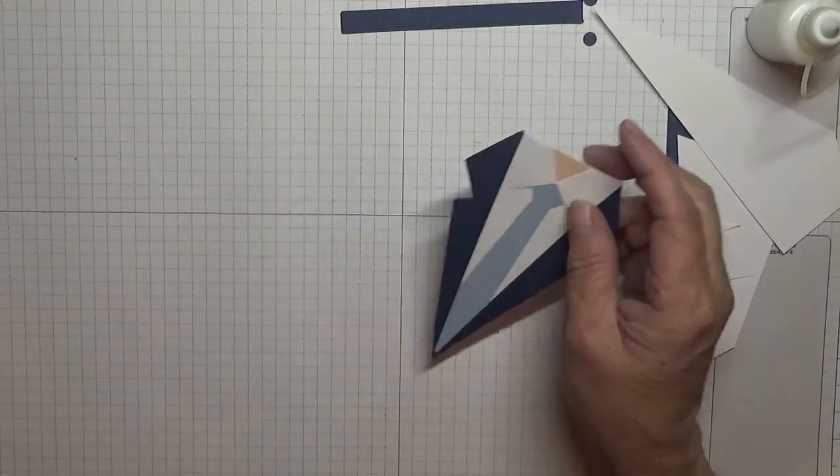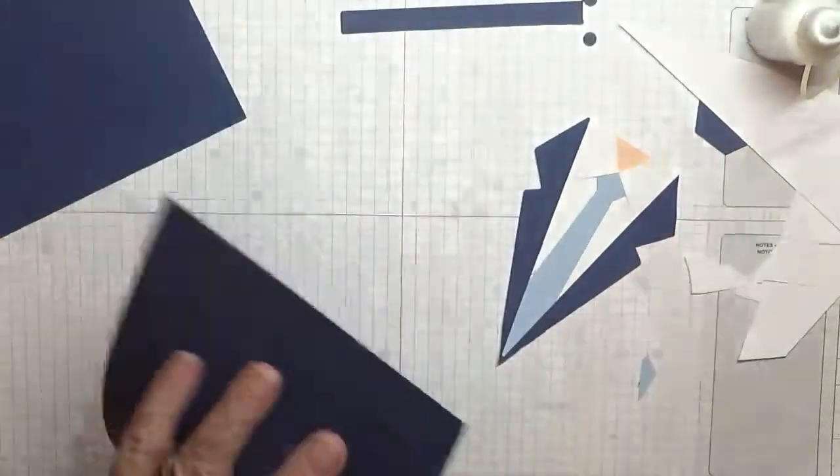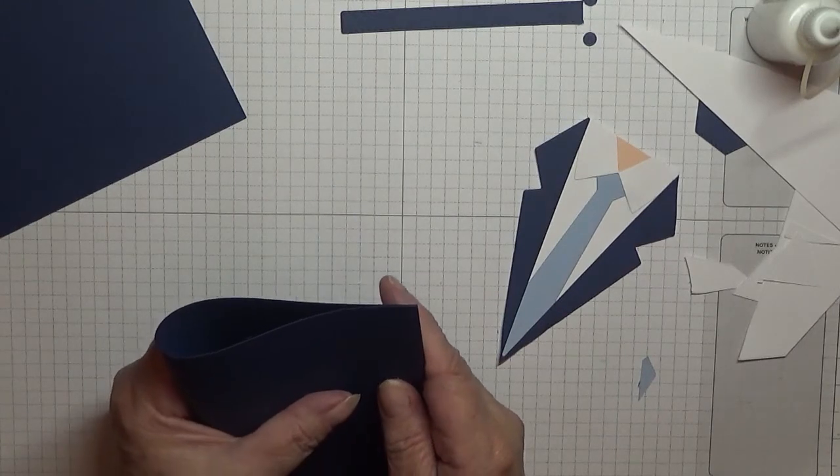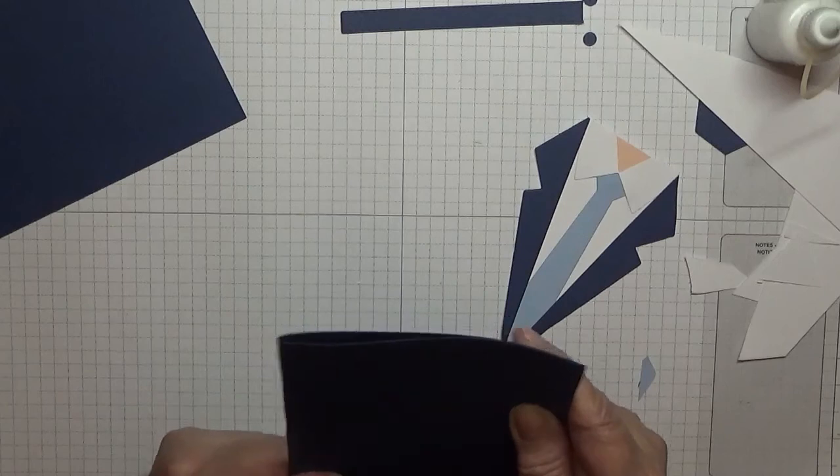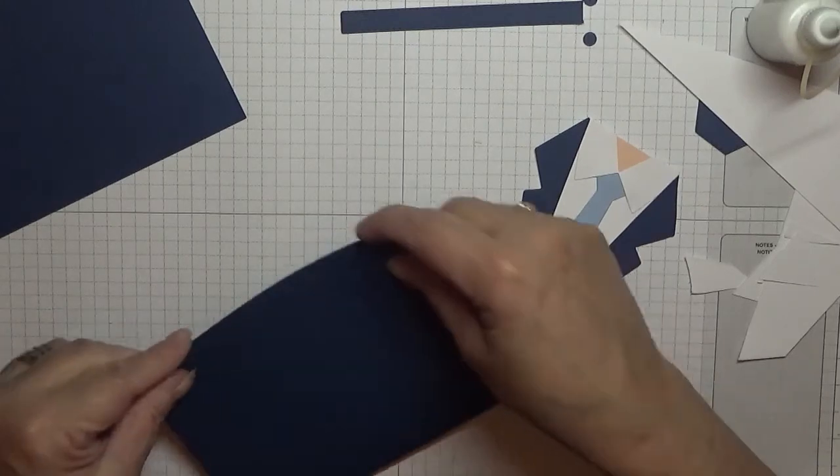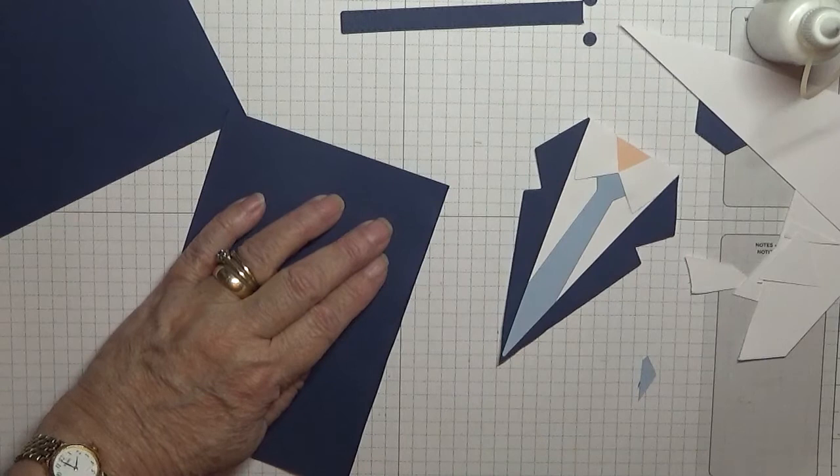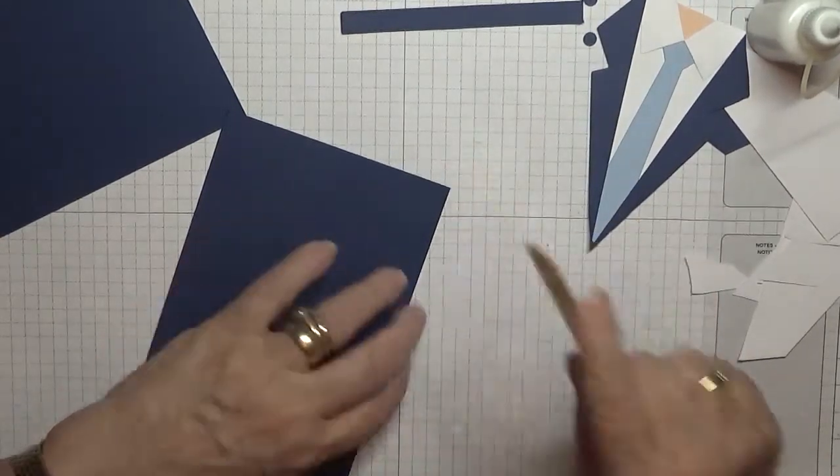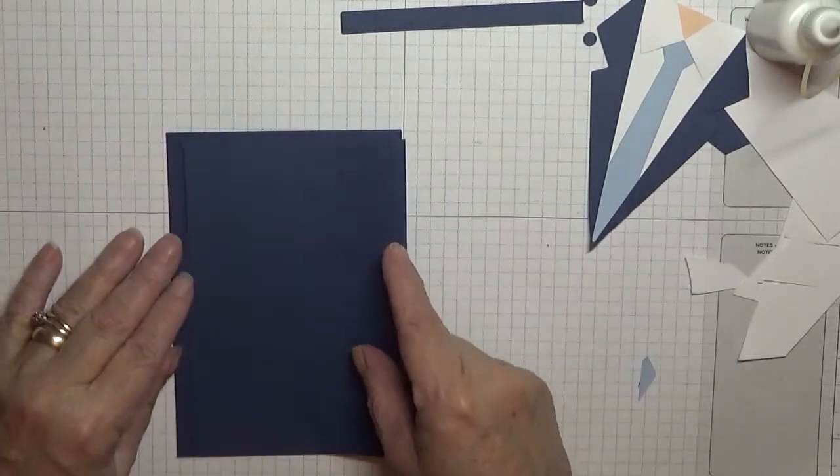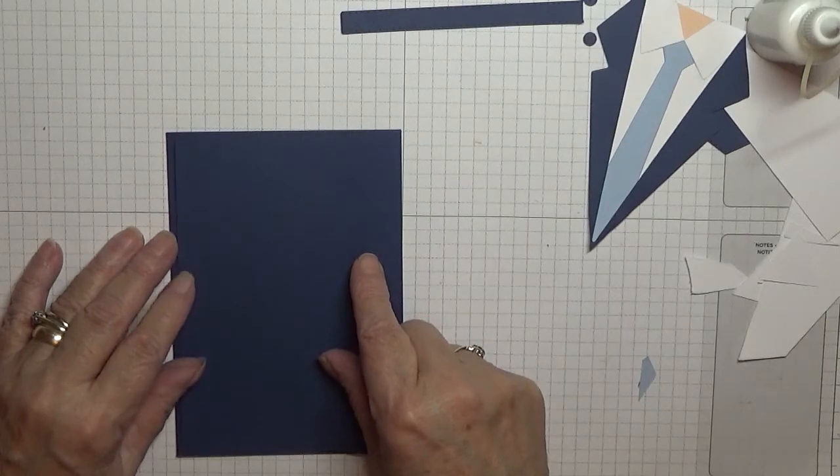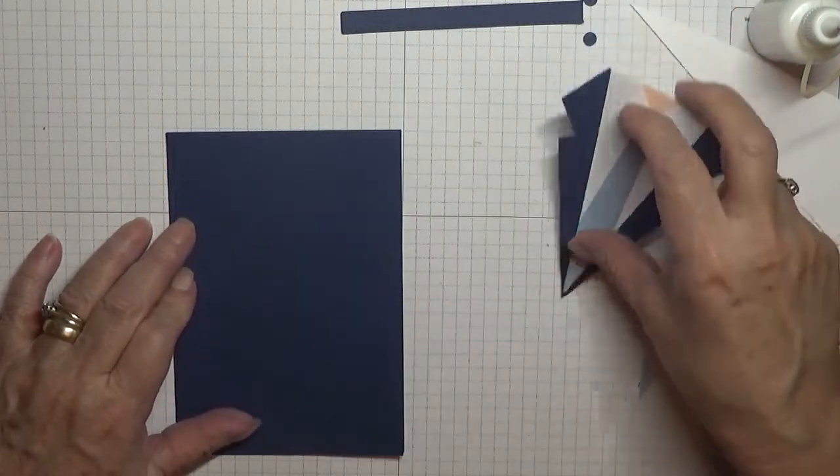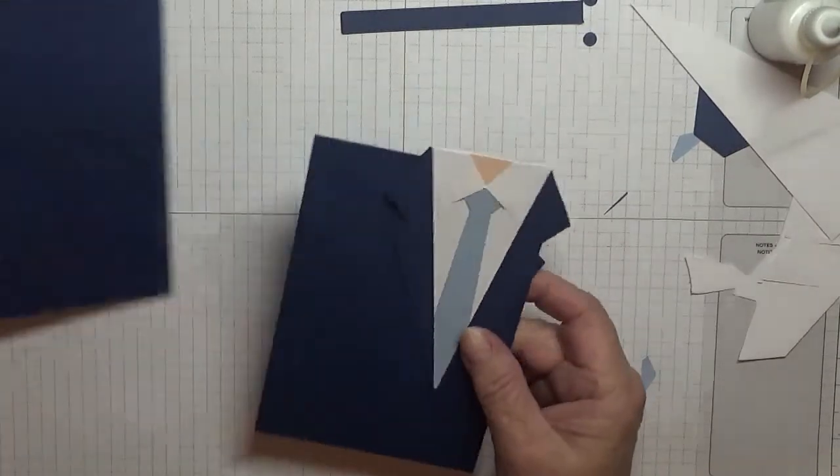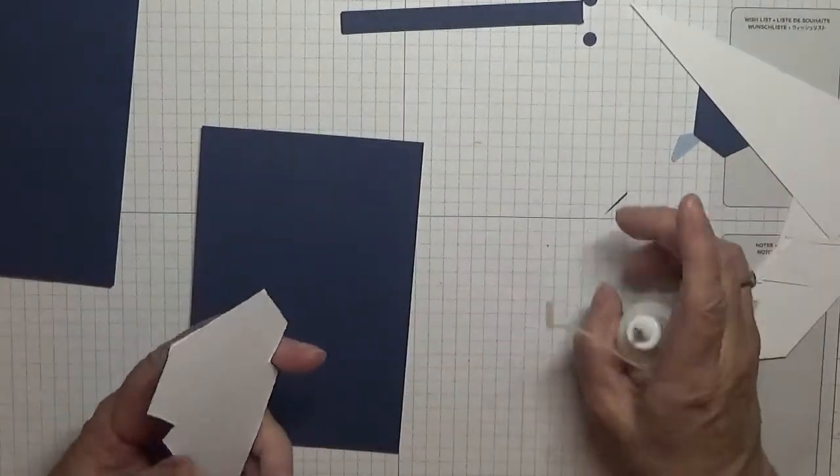And then, oh I never told you what cards we've got. I've got a card base of Night of Navy by eight and a quarter by five and seven eighths folded in half. You should really score but I didn't score this, just burnish it. And I've got a piece of Night of Navy at five and five eighths by three and seven eighths to sit on top, and this is going to sit on top there.